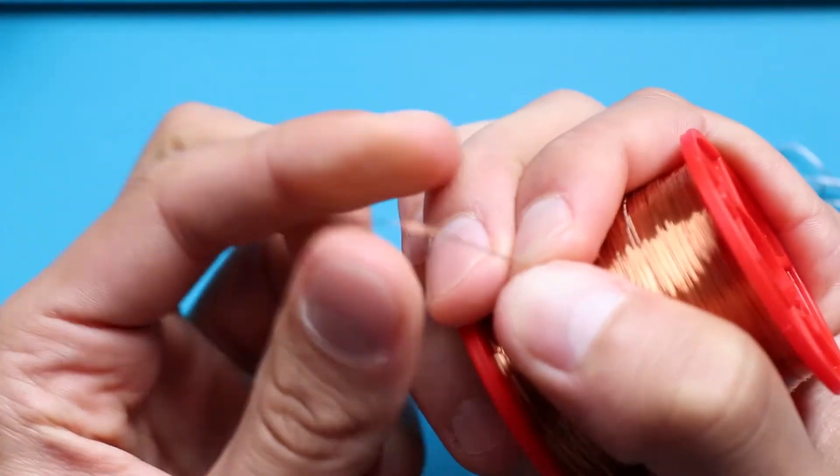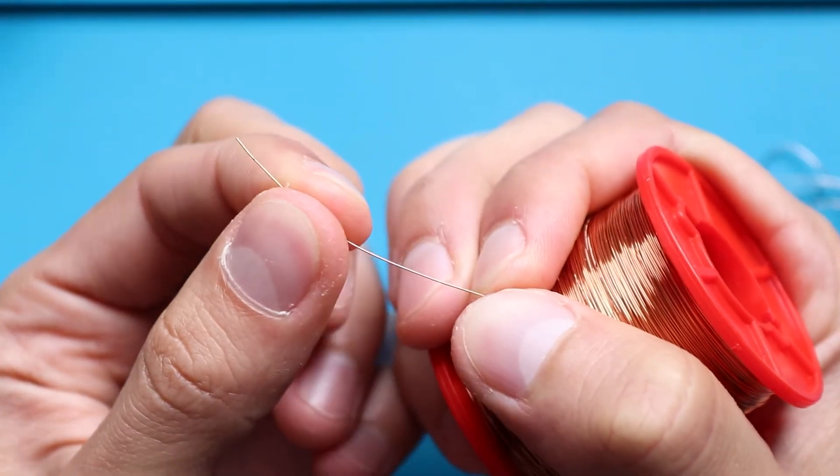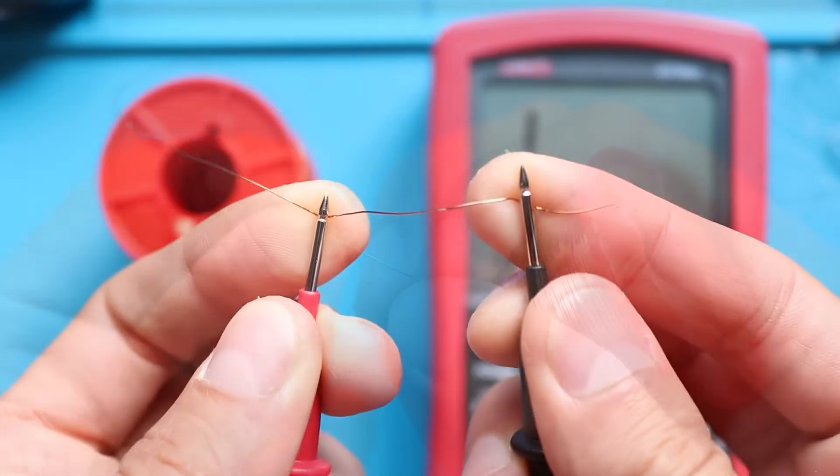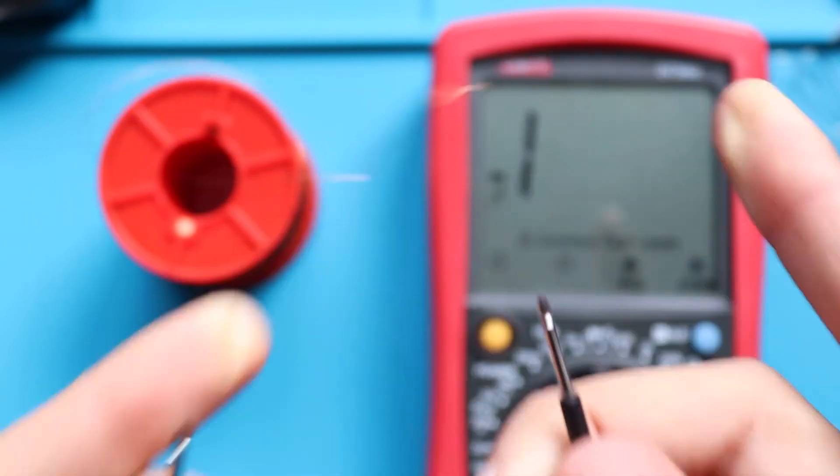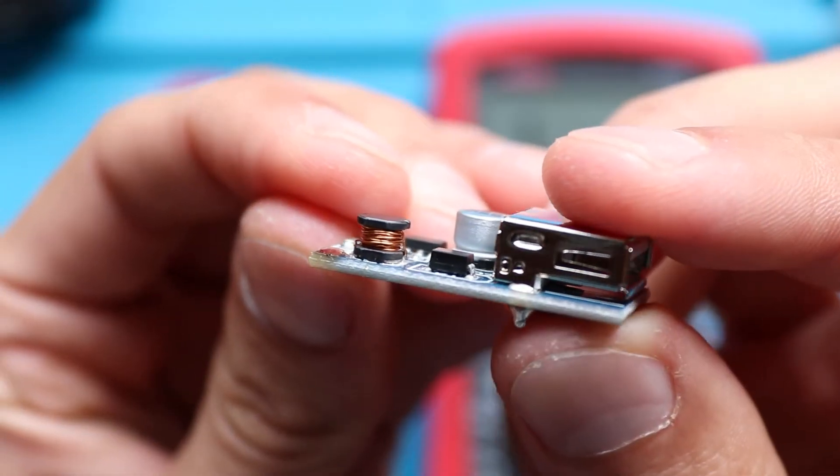So to connect everything together, I will be using solder and enameled wire. This type of wire has very thin isolation and is very convenient for connecting together small components. Same wires, for example, are used in manufacturing transformers and inductors.